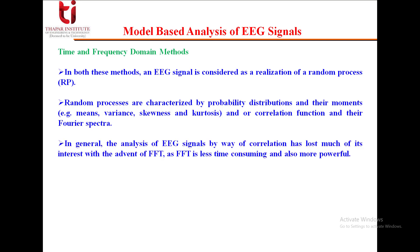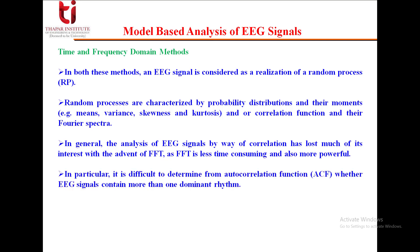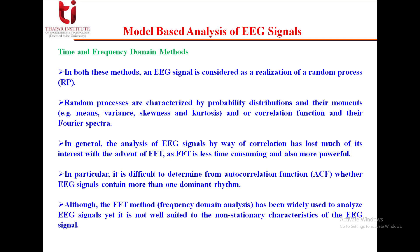In general, the analysis of EEG signals by way of correlation has lost much of its interest with the advent of FFT, as the fast Fourier transform is less time-consuming and more powerful. In particular, it is difficult to determine from the autocorrelation function whether EEG signals contain more than one dominant rhythm. Although the FFT method, i.e., frequency domain analysis, has been widely used, it is not well suited to the non-stationary characteristics of EEG signals.